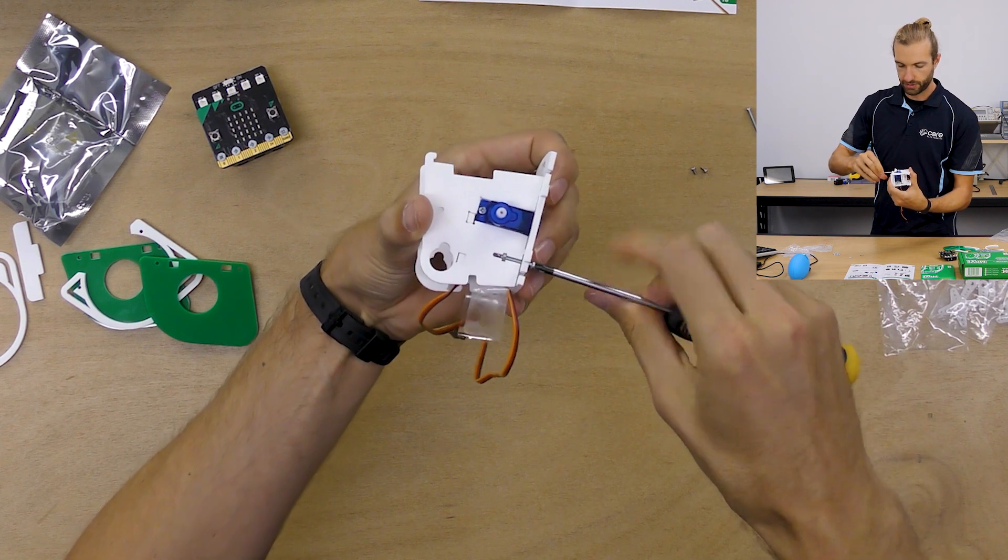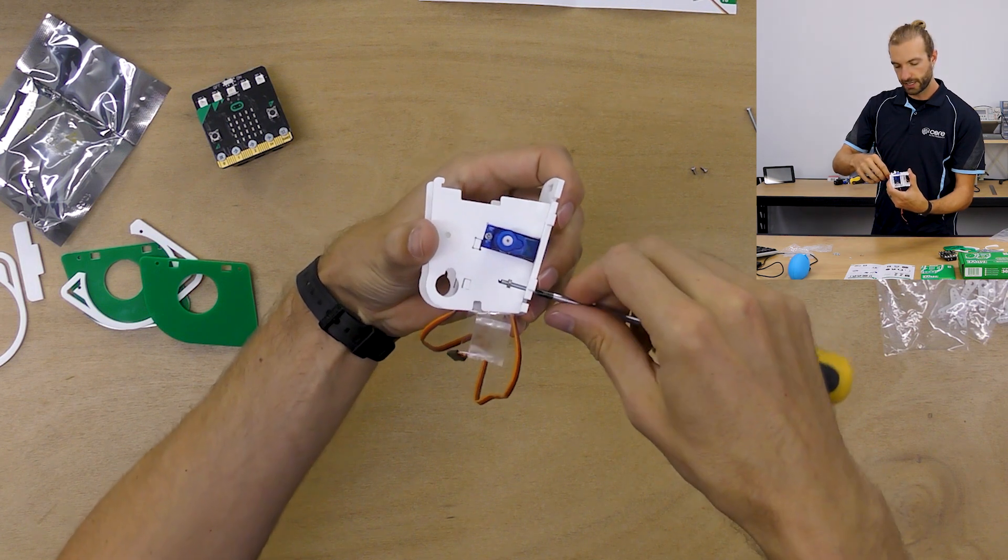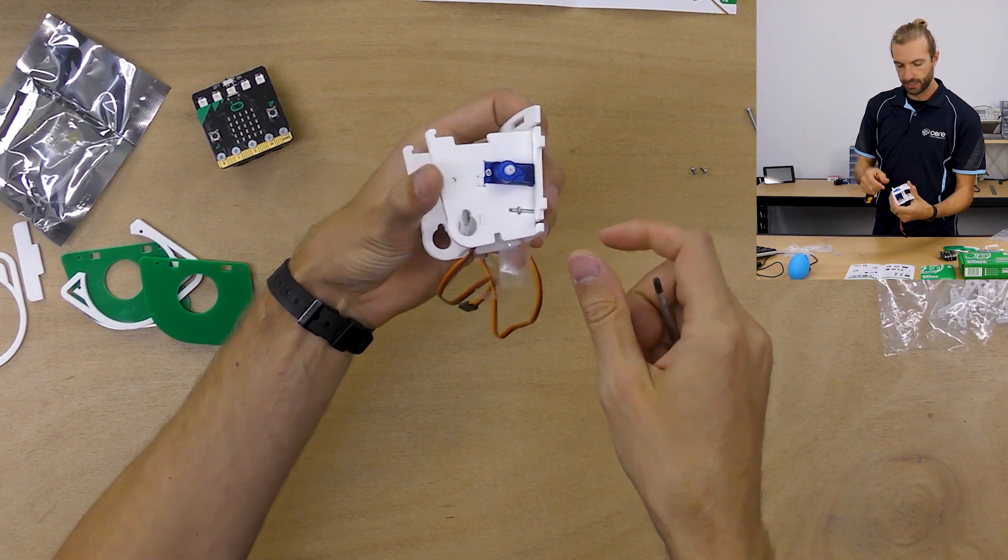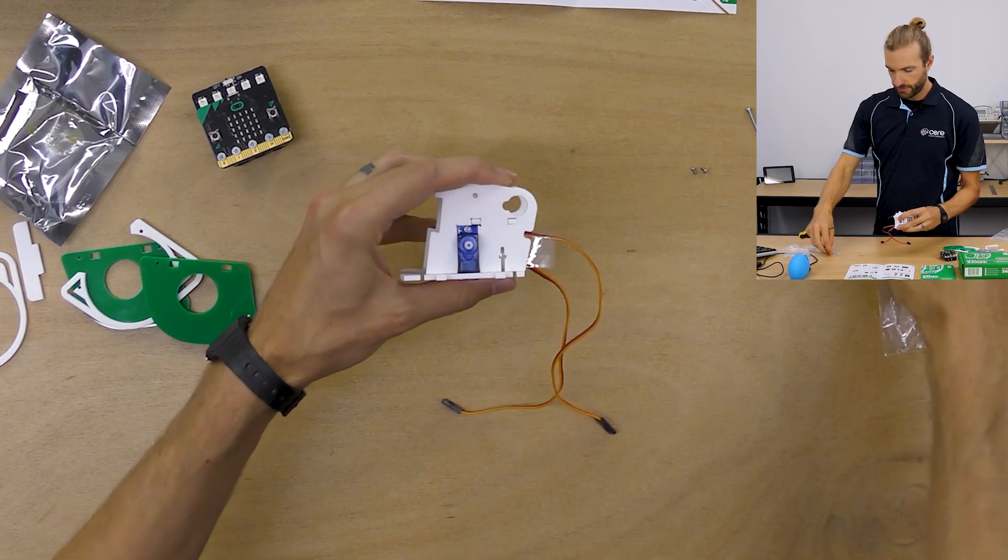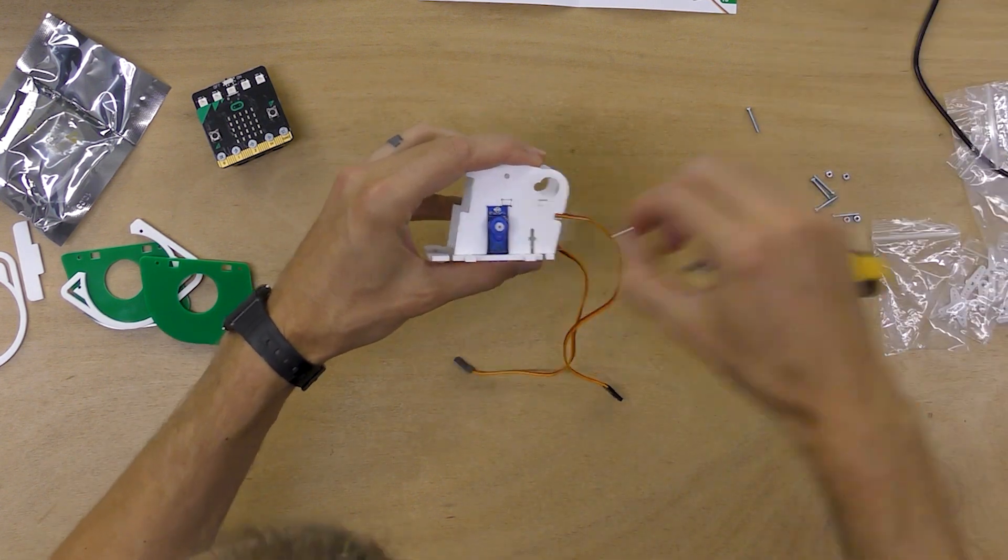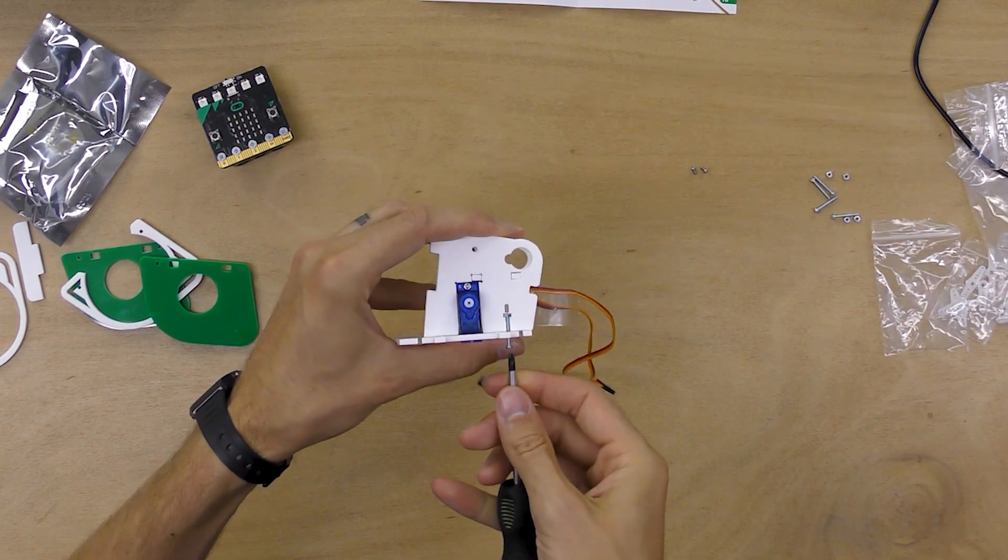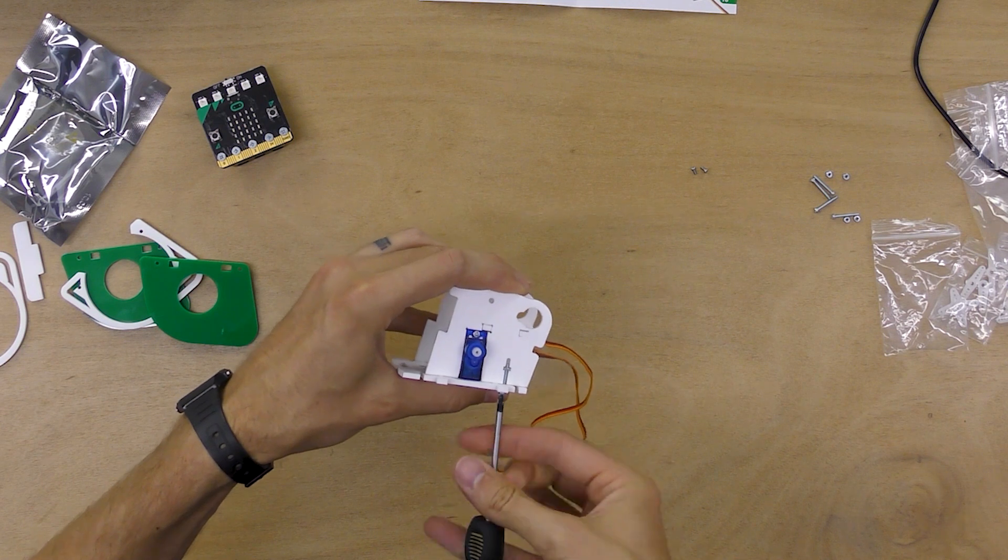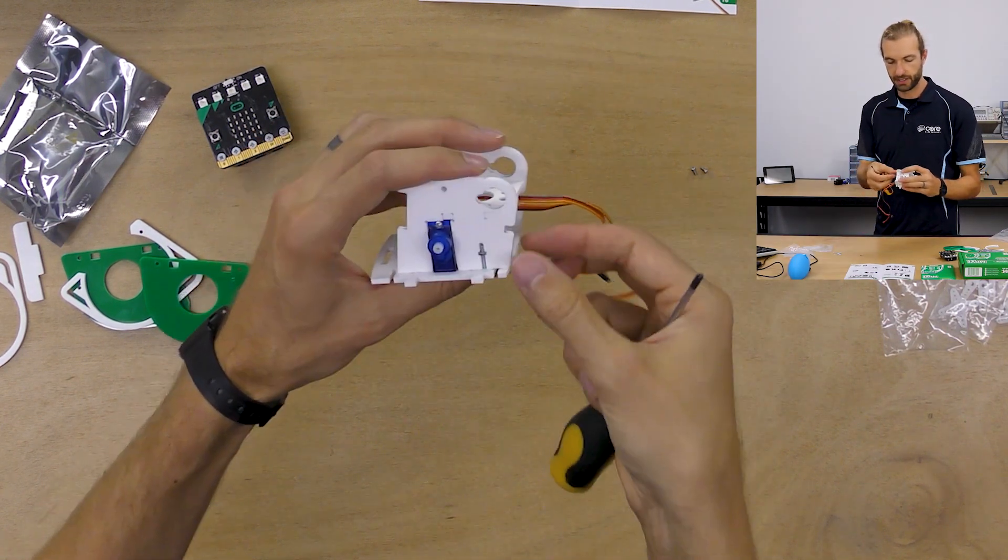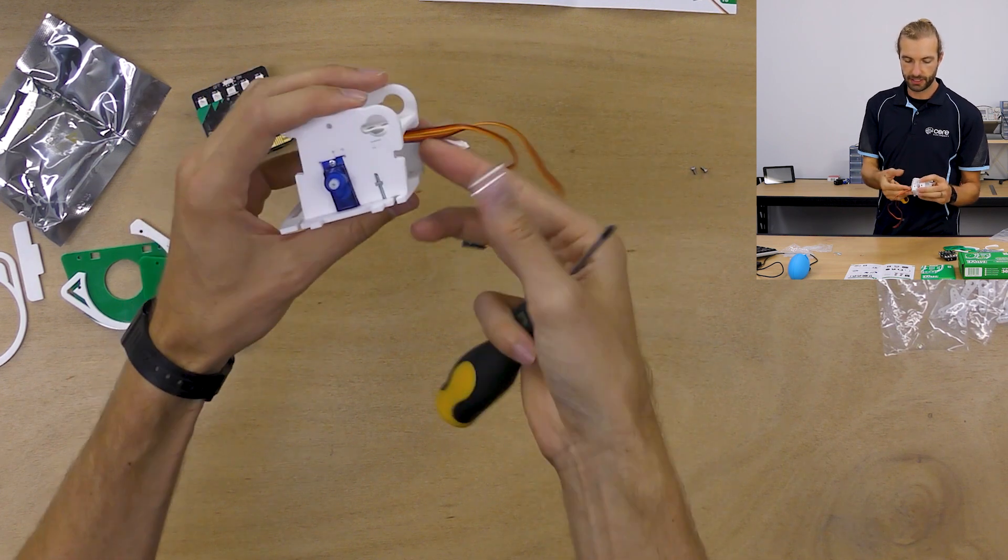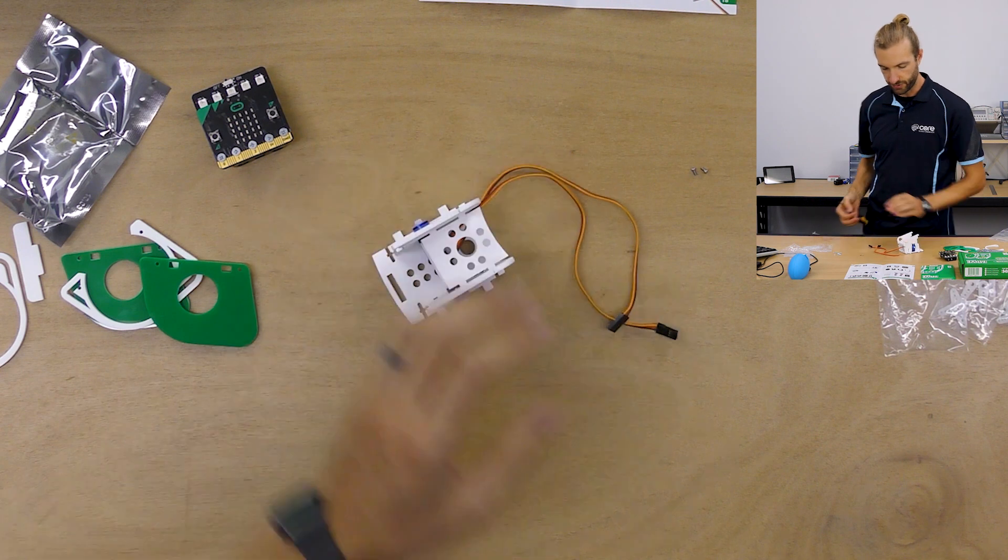So we're just going to screw this in. Again, don't tighten it down very tight right now. Leave it pretty loose, but just tighten it up to stay in position. We'll do the other side. And again, just tighten up to stay in place. Leave it pretty loose. And then we can take these two pieces of tape off that we put in there and hold that nut in place.